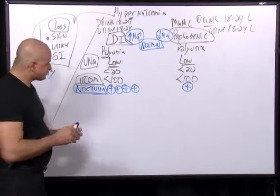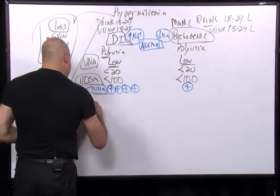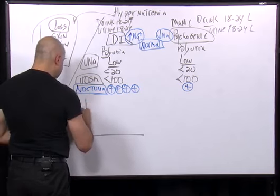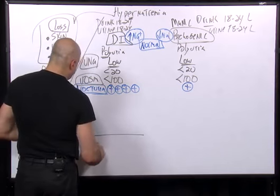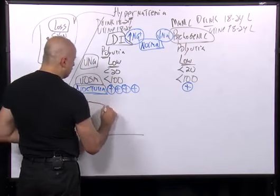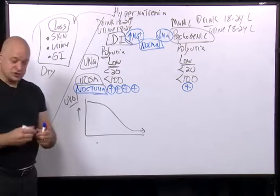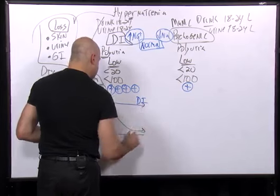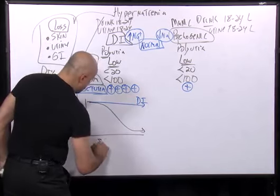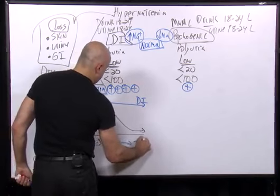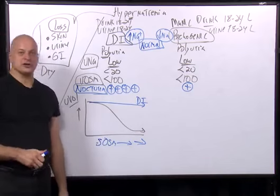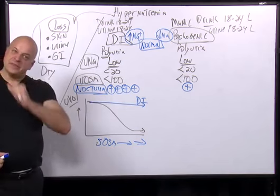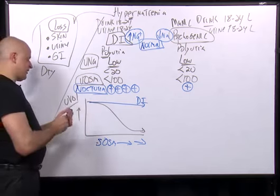Water deprivation test: in a normal person, when you stop drinking, the urine volume should go down. But if you have diabetes insipidus, you continue to make a high urine volume despite the fact that the serum osmolality is going up. As you dry out, you still don't shut off the urine volume — that's the water deprivation test.